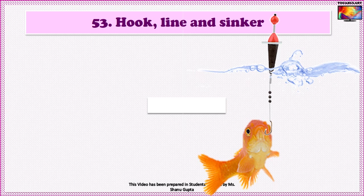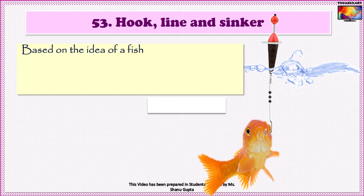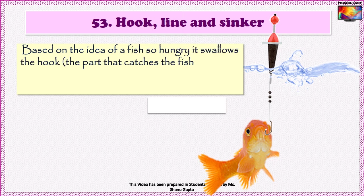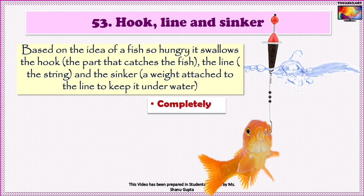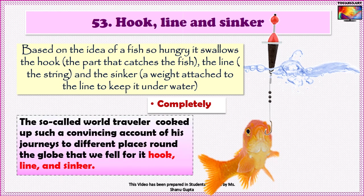Idiom number 53 is 'Hook, line and sinker.' This idiom means completely, and is based on the idea of a fish so hungry that it swallows the hook — the part that catches the fish — the line — the string — and the sinker, a weight attached to the line to keep it under water. An example sentence is: 'The so-called world traveller cooked up such a convincing account of his journeys to different places round the globe, that we fell for it hook, line and sinker.'